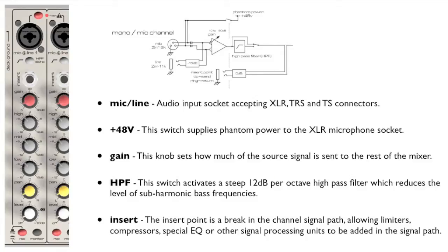The first part of the signal flow is concerned with getting the audio signal into the mixer. Here we see the complete channel strip, as well as an electrical schematic of the channel to the point just before the equalization section. The schematic is useful because it clearly shows the order that features are present in the signal flow.